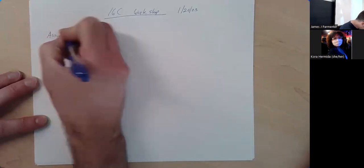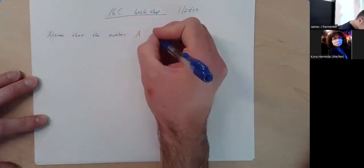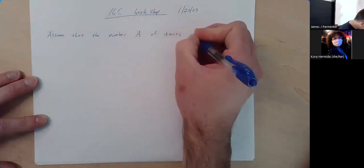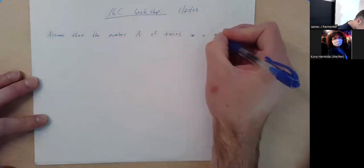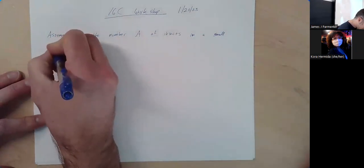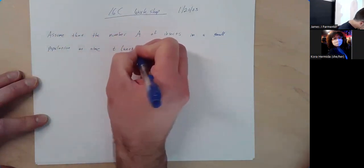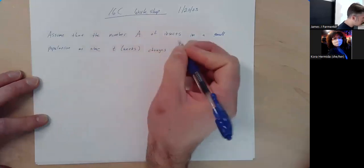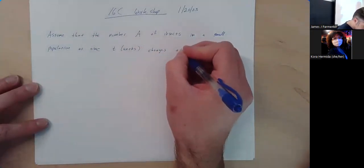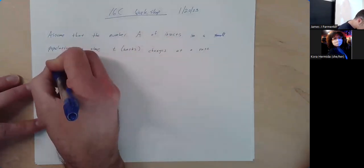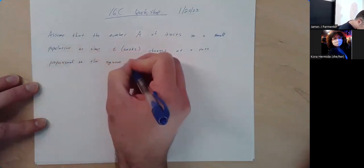Let's assume that the number — we'll call it A for amount — of insects in a small population at time t measured in weeks changes. 'Changes' is a clue: it means there's a derivative, something is changing as time goes on. Changes at a rate — that's also a good clue — proportional to the square of the number present.